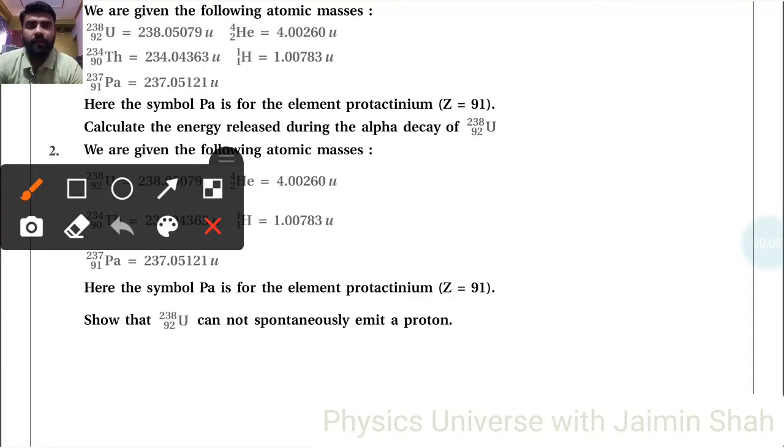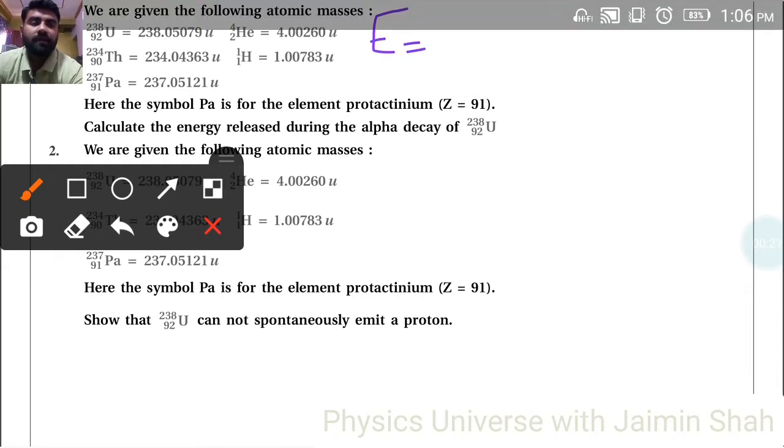We are given the following atomic masses: uranium, helium, thorium, hydrogen, and Pa. Here the symbol Pa is the element protactinium. Calculate the energy released during the alpha decay. So the energy formula is equal to delta m c squared.